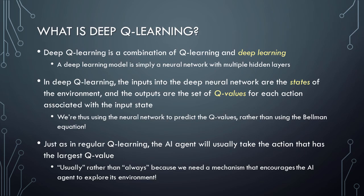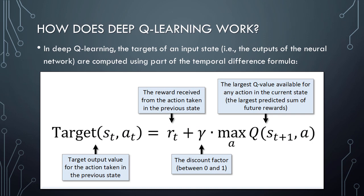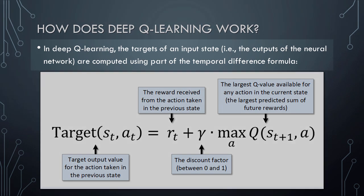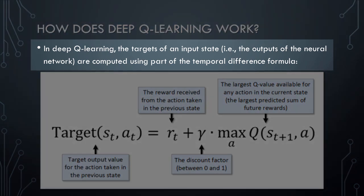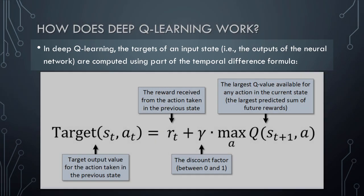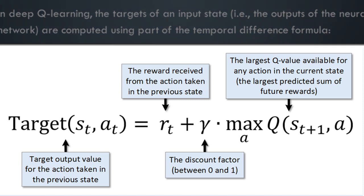In order to train our deep Q learning network, we provide the network with examples of inputs and outputs. The targets of an input state — the outputs of the neural network — are the Q values associated with each possible action for that input state. The Q values are our current predictions of the sum of all future rewards we would receive if we were to take each action. These Q values are computed using part of the temporal difference formula. As shown in this equation, the target value the network is trying to predict for each possible action equals the reward received from the action taken in the previous state plus the largest Q value available for any action in the current state multiplied by the discount factor gamma, which discounts future rewards.